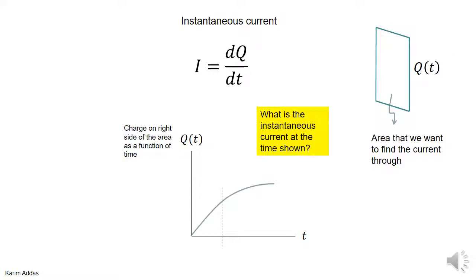What if we want to calculate the instantaneous current due to charges going through the surface? Here we have an area, and if we monitor what's happening to the charge on the right side of the area, we get Q as a function of time and we plot Q as a function of time.